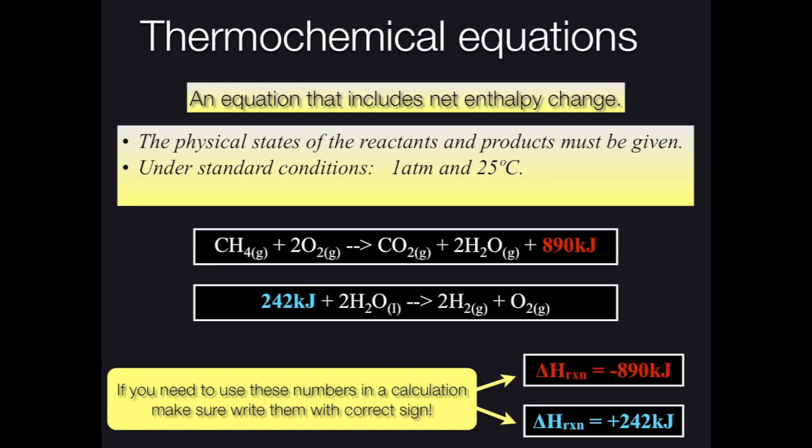Chemical reactions may release energy in the form of exothermic energy, or they may absorb energy in the form of endothermic energy. And we include the net enthalpy change on the front end or on the back end of a reaction, depending on if it's endothermic or exothermic. It's important to note that the physical states of the reactants and products must be given in thermochemical reactions. And we're going to assume standard state conditions of 1 atmosphere and 25 degrees Celsius for all thermochemical reactions.